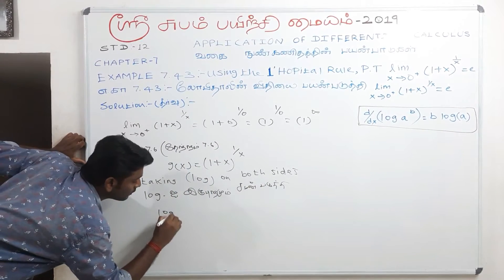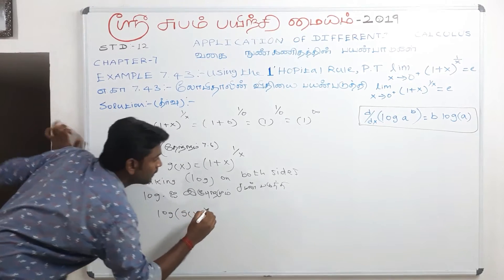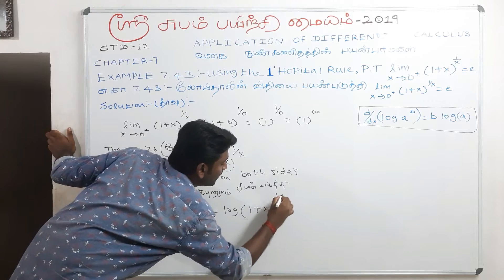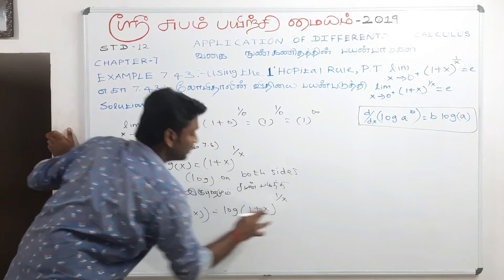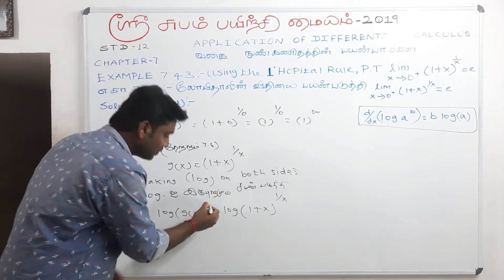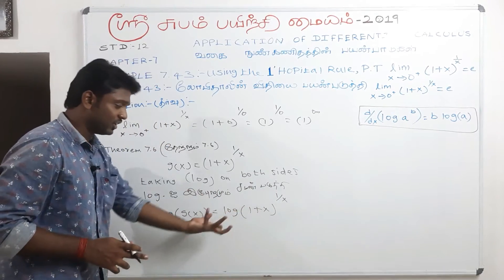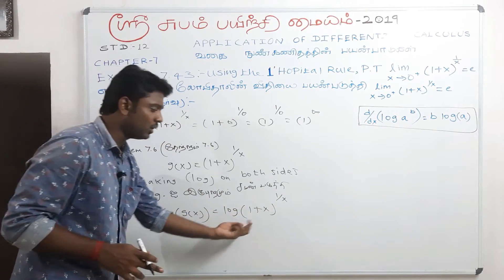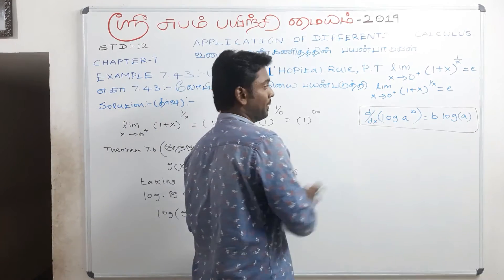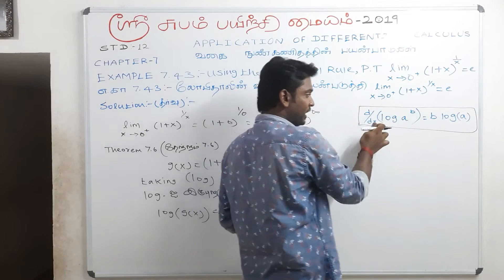Taking log of g of x: log g of x equals log of (1 plus x) multiplied by 1 by x, which can be written as log(1 plus x) divided by x.